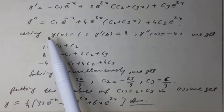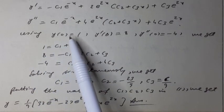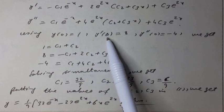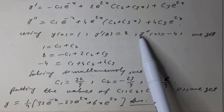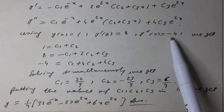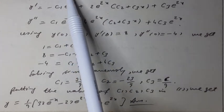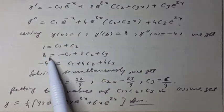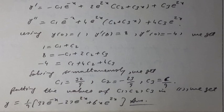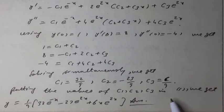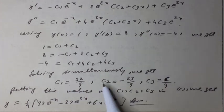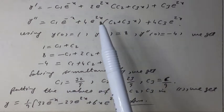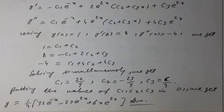Using the initial conditions y(0) = 1, y'(0) = 8, and y''(0) = -4, we get three equations. Solving these simultaneously, we get c₁ = 22/9, c₂ = -23/9, and c₃ = 6/9. Substituting these values into equation 1, we get the final answer.